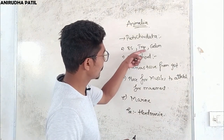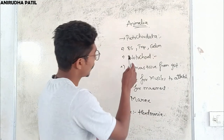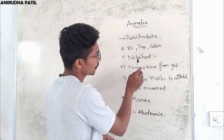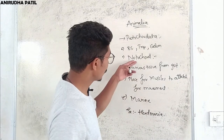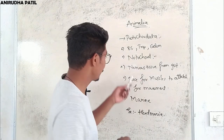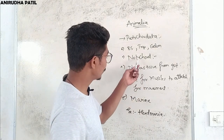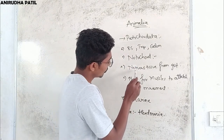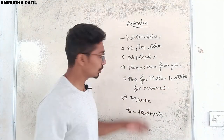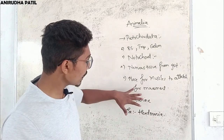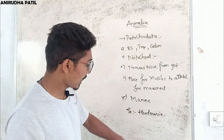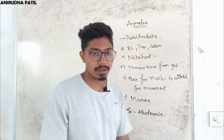The next group is Protochordata. The body is bilaterally symmetrical, triploblastic, and has a coelom. Importantly, they have a notochord present, though it may not be present at all stages of life. The notochord helps separate nervous tissue from the gut and provides a place for muscles to attach for movement. Most organisms are marine. An example is Herdmania.